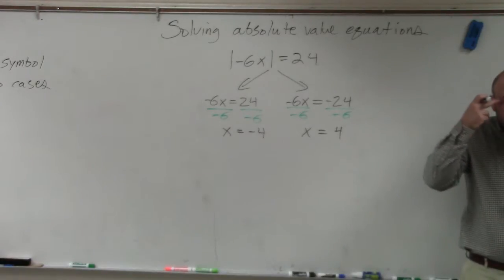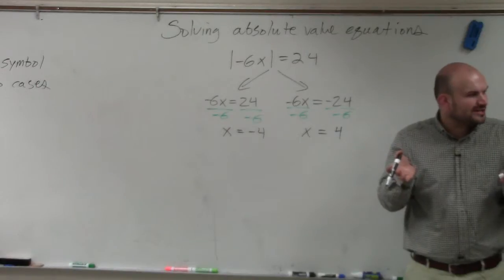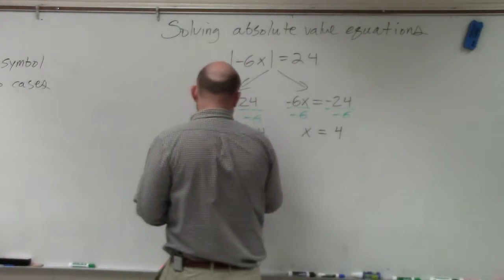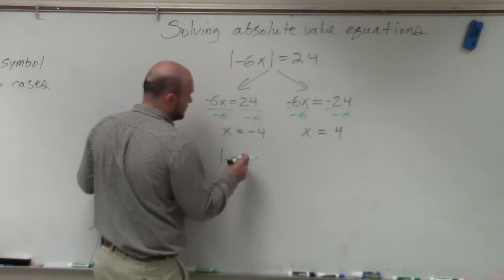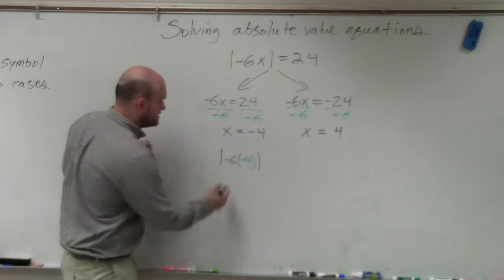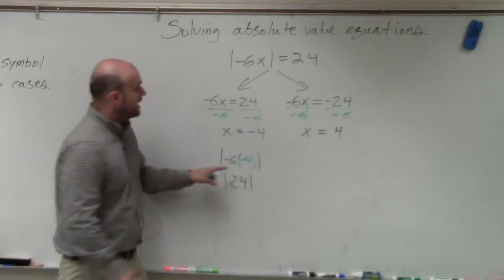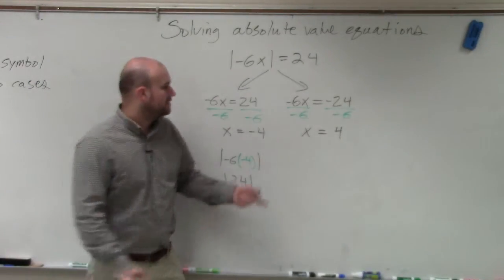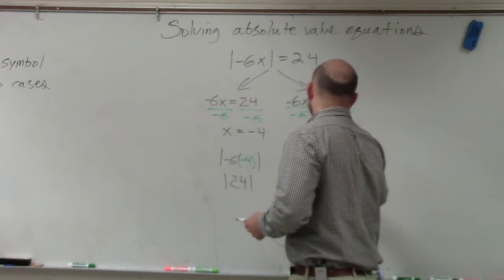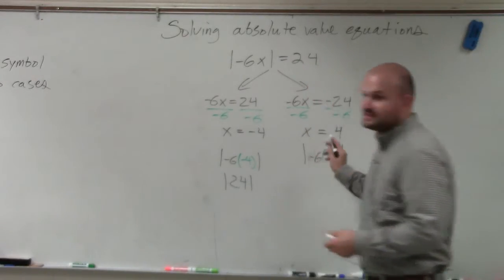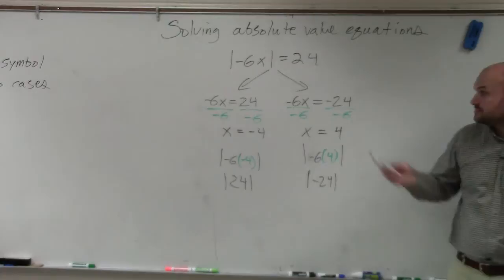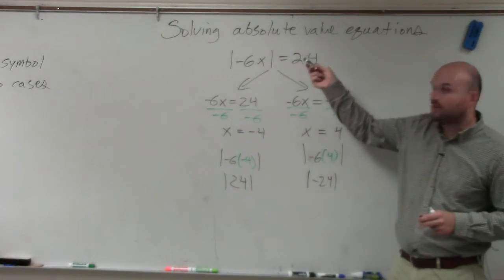Now let's make some sense of this and check our answers. Negative 6 times negative 4: negative 6 times negative 4 is 24, and the absolute value of 24 is 24. Now let's plug in positive 4: negative 6 times positive 4 is negative 24, and the absolute value of negative 24 is positive 24. So both of them work — if you plug them both in, they both equal 24.